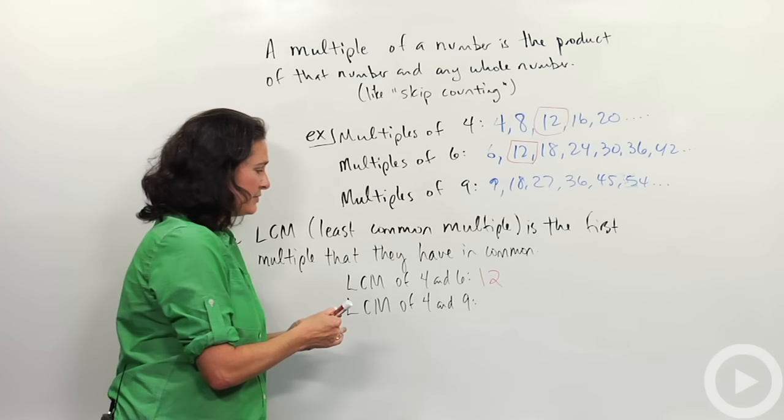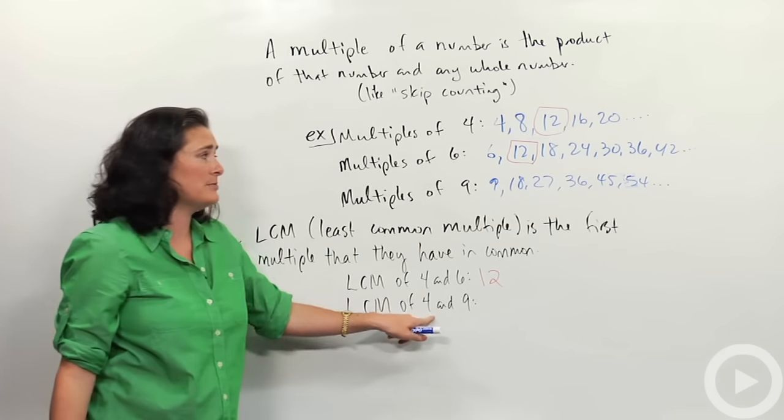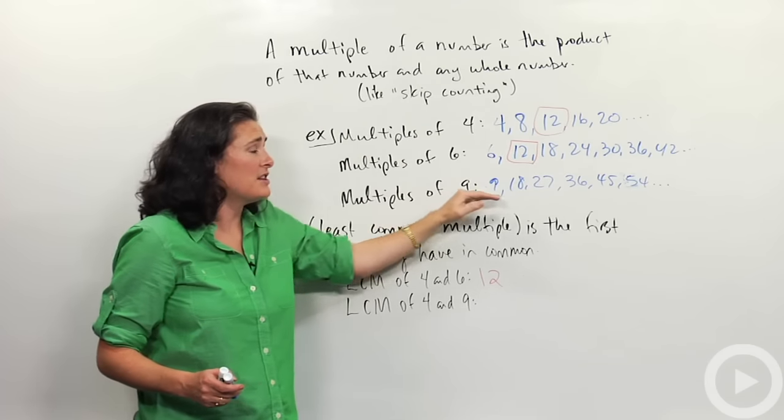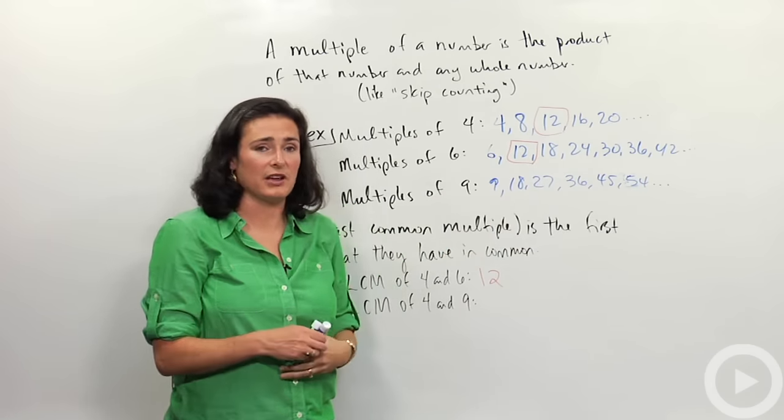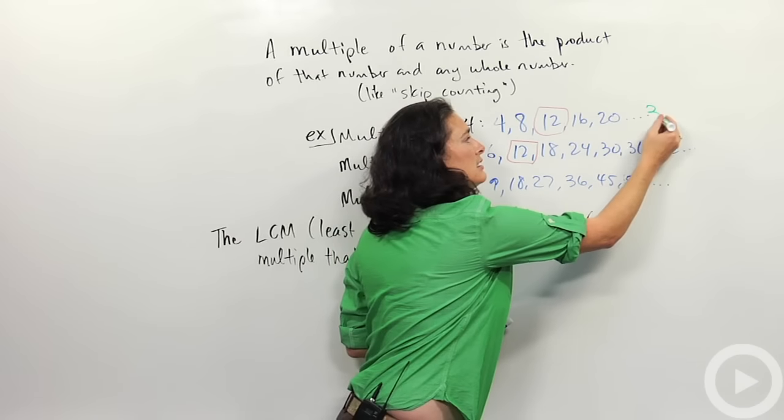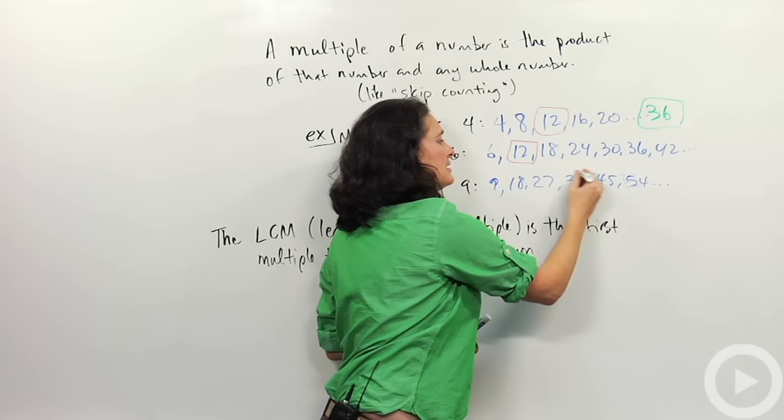I'm going to use a different color for the next one. If I'm looking for the least common multiples of 4 and 9, I'd be looking in the 4 row, and in the 9 row, and trying to find what they have in common. The first number they're going to have in common is 36.